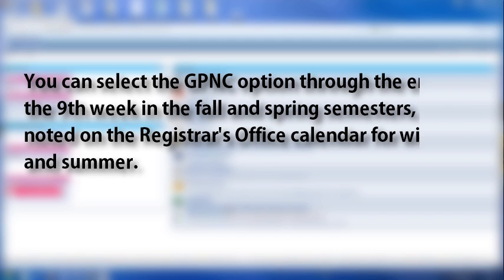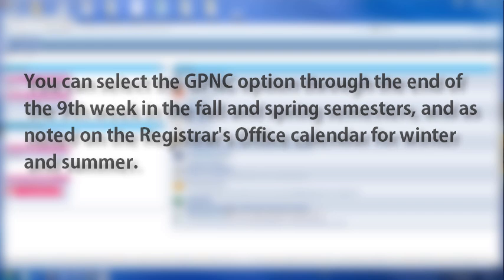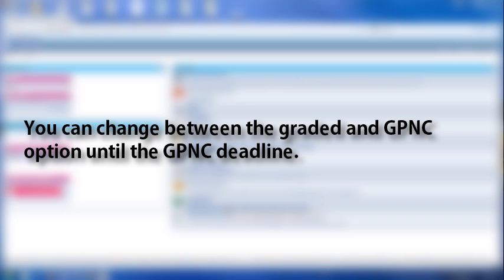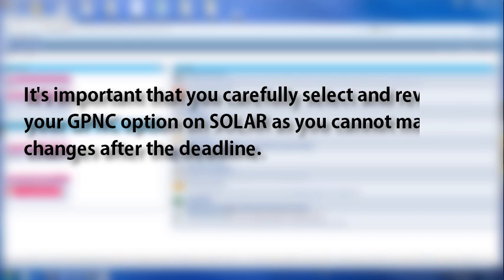You can select the GP&C option through the end of the 9th week in the fall and spring semesters, and as noted on the Registrar's Office calendar for winter and summer. You can change between the graded and GP&C option until the GP&C deadline. It is important that you carefully select and review your GP&C option on SOLAR as you cannot make changes after the deadline.